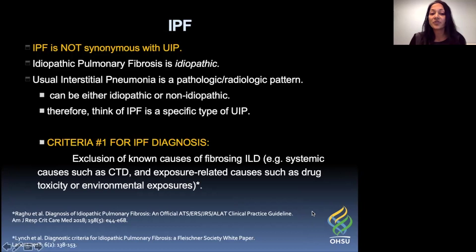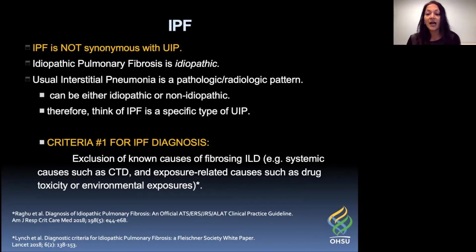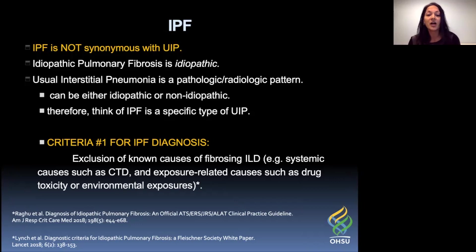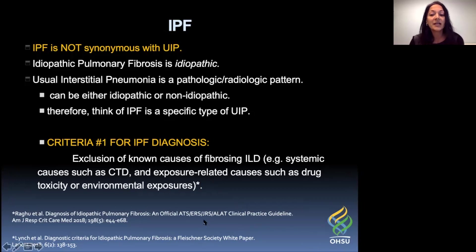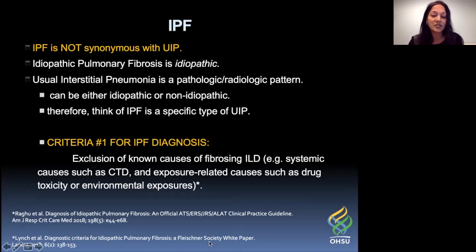This leads us to the first criteria for the diagnosis of IPF. You must exclude known causes of fibrosing ILD, which includes systemic causes such as connective tissue disease and exposure-related causes such as drug toxicity or environmental exposures, amongst other causes. This criteria comes verbatim from the ATS multi-society clinical practice guidelines published in 2018. The Fleischner Society white paper, published six months earlier in 2018, has very similar criteria.